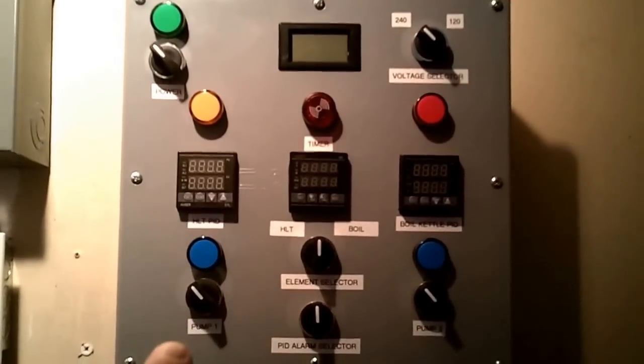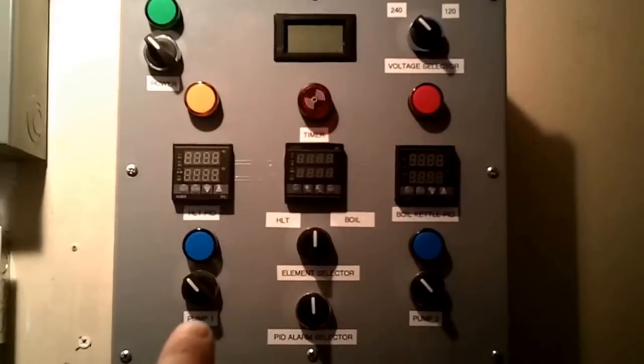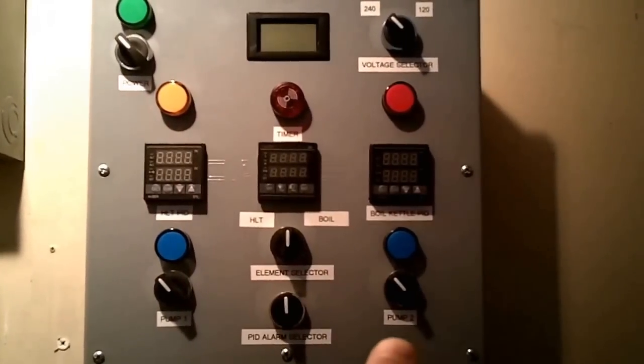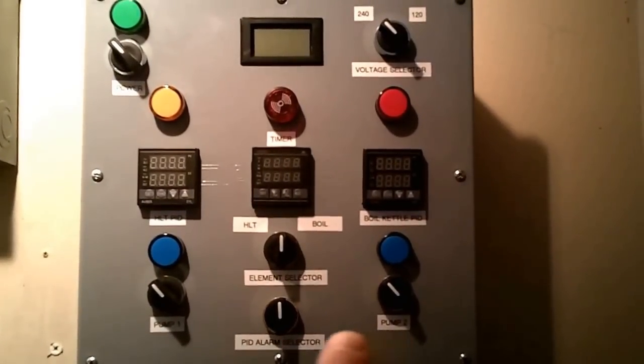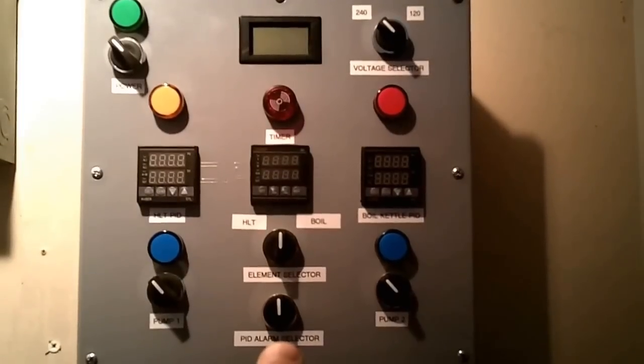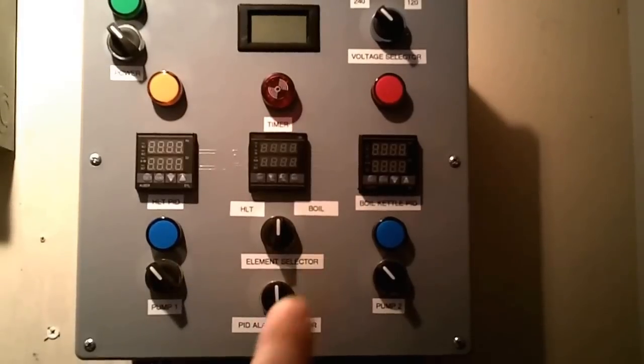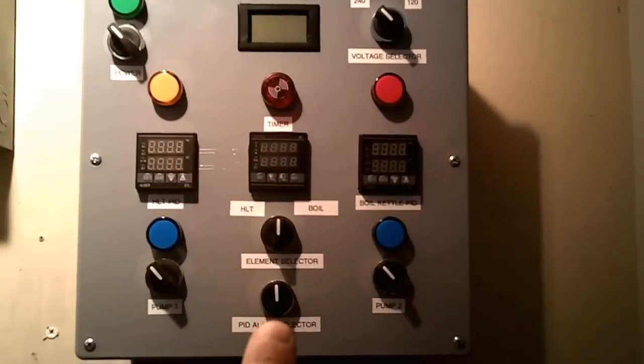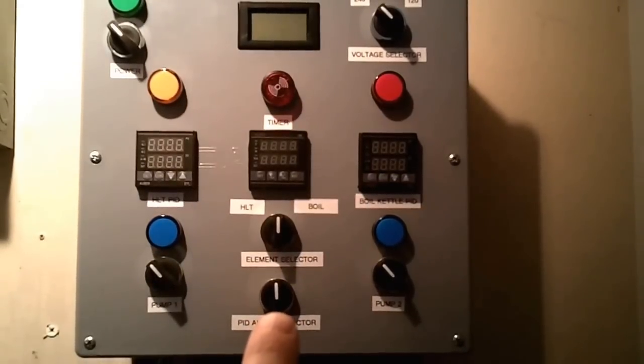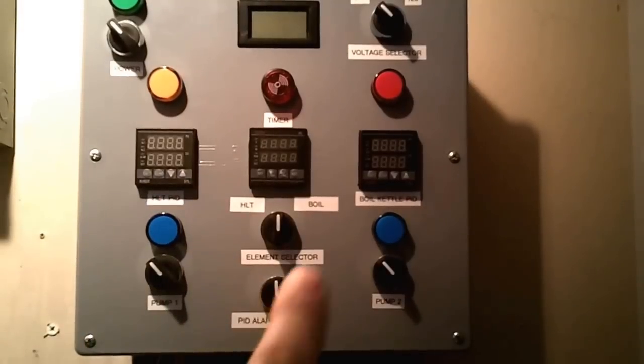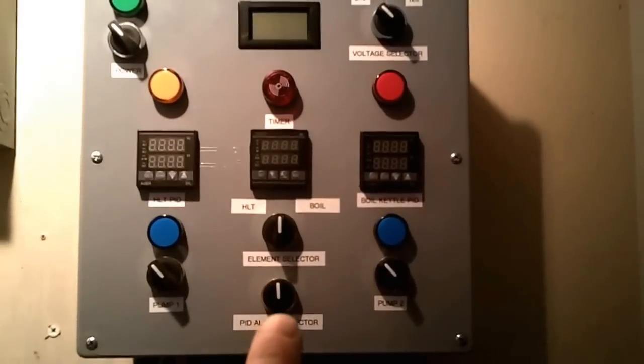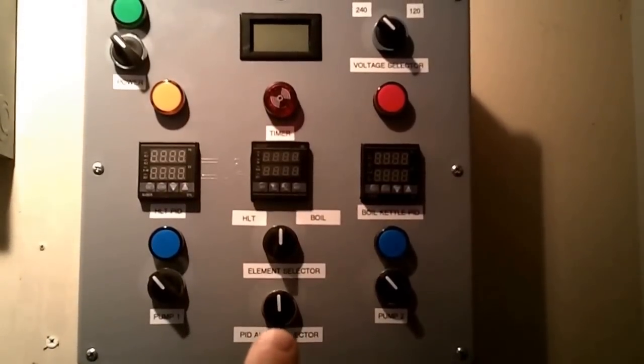Anyways, so basically down in the bottom left corner here I've got my pump one switch. Bottom right corner is my pump two switch. In the center here this is a PID alarm selector so I can decide if I want to hear the alarm or not when it goes on or goes off. So basically I just point to whichever PID I'm wanting to hear the alarm for.